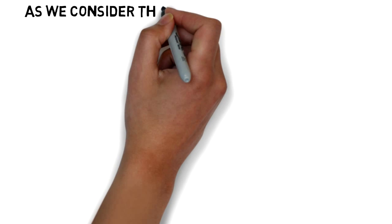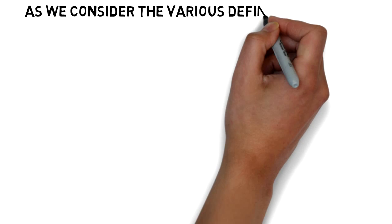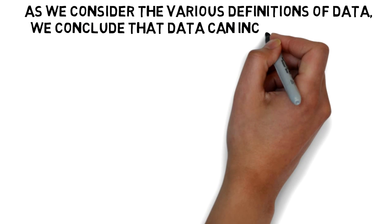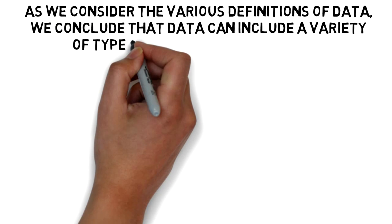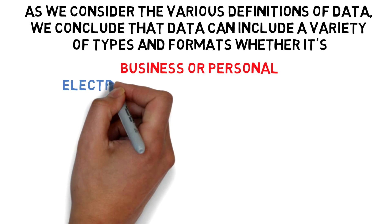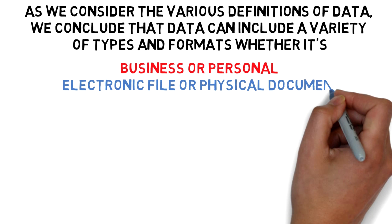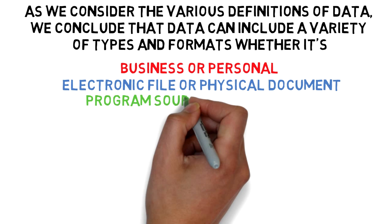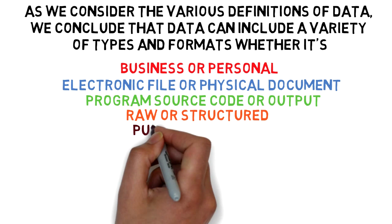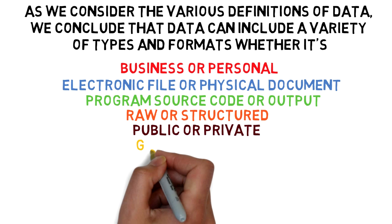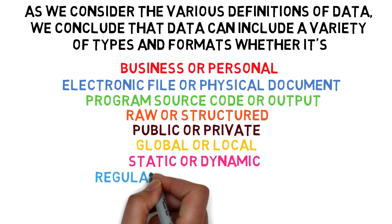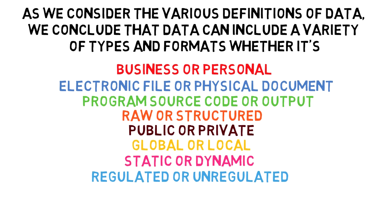As we consider the various definitions of data, we conclude that data can include a variety of types and formats, whether it's business or personal, electronic file or physical document, program source code or output, raw or structured, public or private, global or local, static or dynamic, and regulated or unregulated.